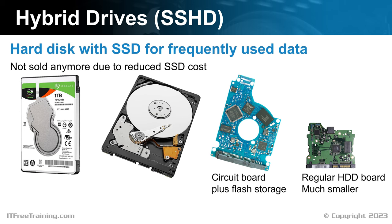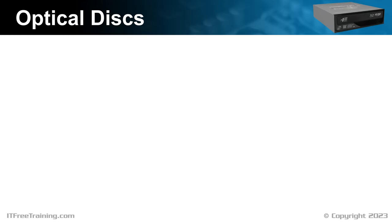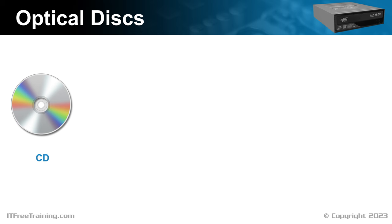So far, I have looked at storage that does not have changeable media. I will next look at storage that does have changeable media. The first is optical disks. There have been many different types of optical disks released over the years, most of which have now disappeared, with a few still in use. The first is CD, or compact disk. CDs have been around since the 80s and have an upper capacity of 700 megabytes. There were other standards, such as Laserdisc, but they were never widely adopted.